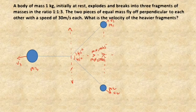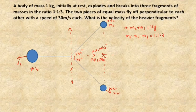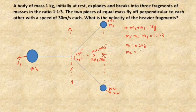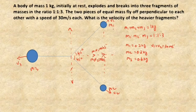The total mass m1 + m2 + m3 equals one kilogram, with the ratio 1:1:3. So m1 equals one-fifth of one kilogram, which is 0.2 kg. m2 is also one-fifth, equal to 0.2 kg. m3 is three-fifths, equal to 0.6 kg. The velocities v1 and v2 are equal, given as 30 meters per second for particles m1 and m2. v3 is the heavier fragment velocity we need to calculate.